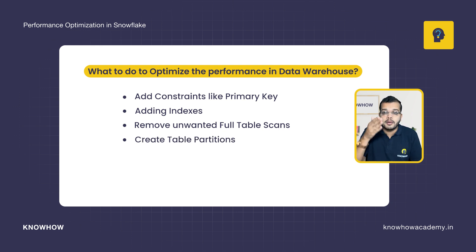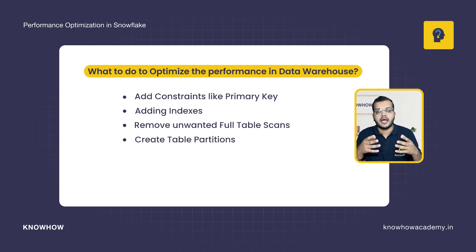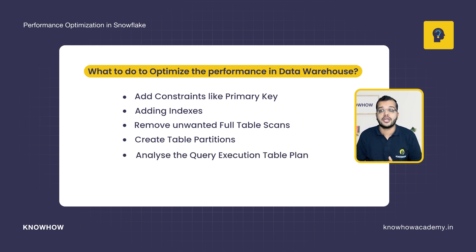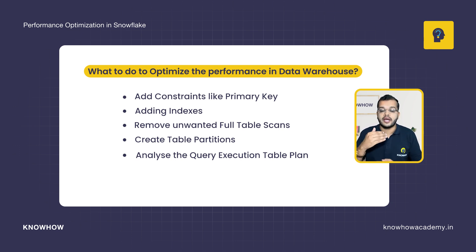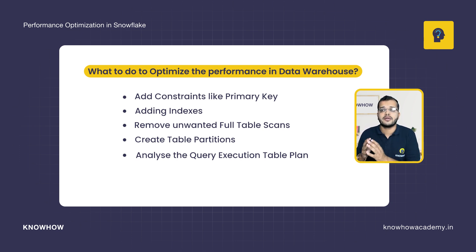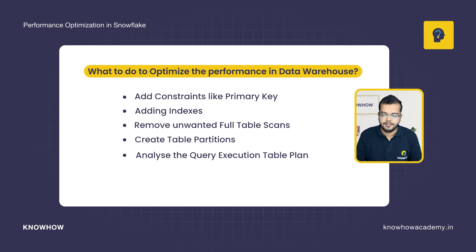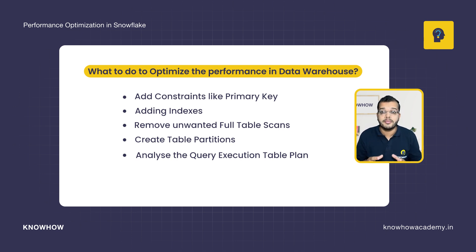We have to create table partitions so that it will be helpful for better performance. We need to analyze the query execution plan because whenever we are writing a query, we have to check the execution plan — whether it is SQL Server or Snowflake. When we try to execute our plan, we get an idea of the time duration, how much time it is taking, which part is getting more size, which is getting more time. So these are the things to consider when optimizing performance in a data warehouse.